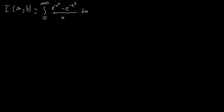What we're going to do next is take I_a, which means the partial derivative of I with respect to a. That's pretty easy to calculate — we just end up with the integral from zero to infinity of e^(−x^a) / x. The e^(−x^b) term disappears, and then we multiply by −x^a and by ln(x), because that's the derivative of x^a with respect to a.